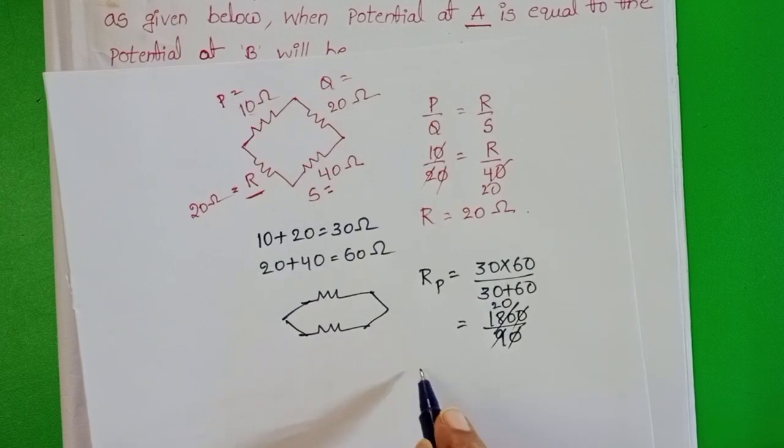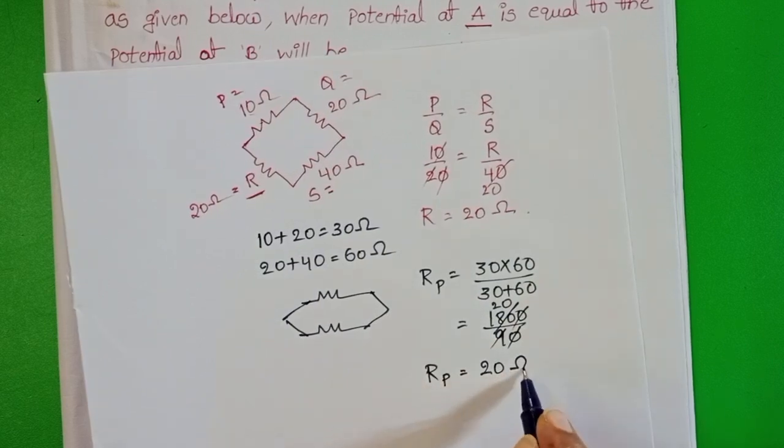1800 by 90. 9 ones, 9 twenties. Equivalent resistance of the circuit equals 20 ohms.